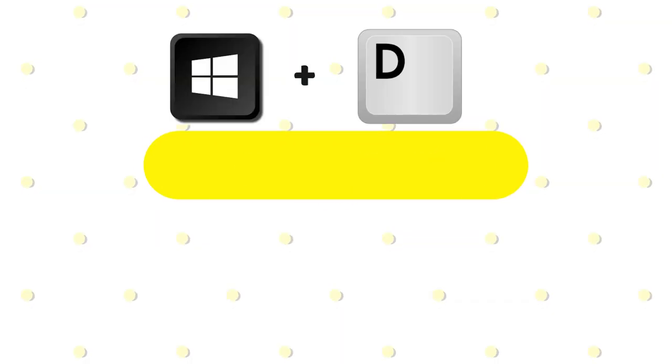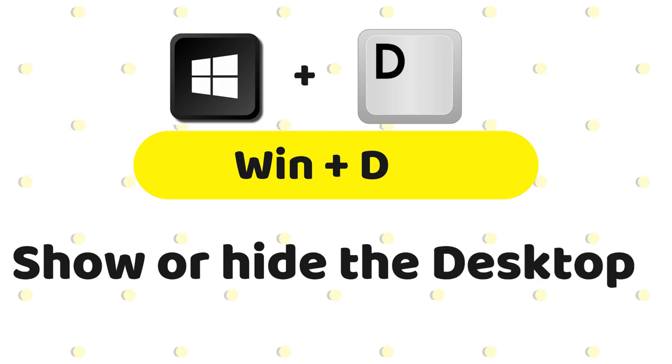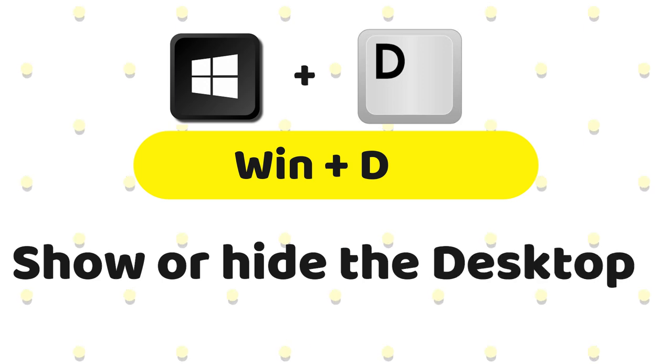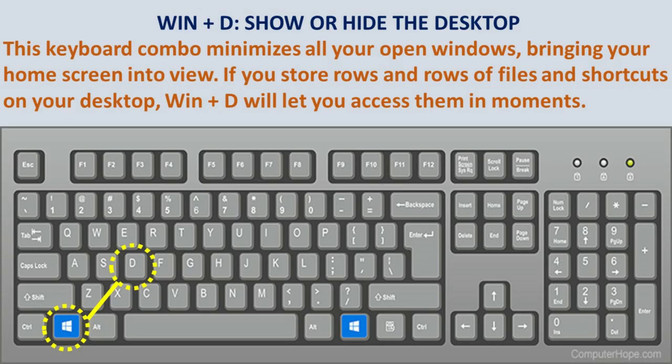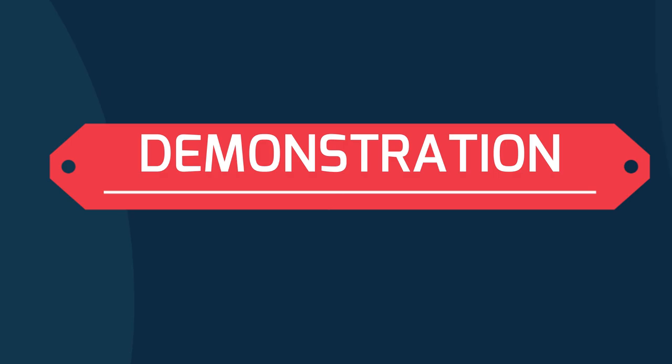Win plus D — show or hide the desktop. This keyboard combo minimizes all your open windows, bringing your home screen into view. If you store rows and rows of files and shortcuts on your desktop, Win plus D will let you access them in moments.